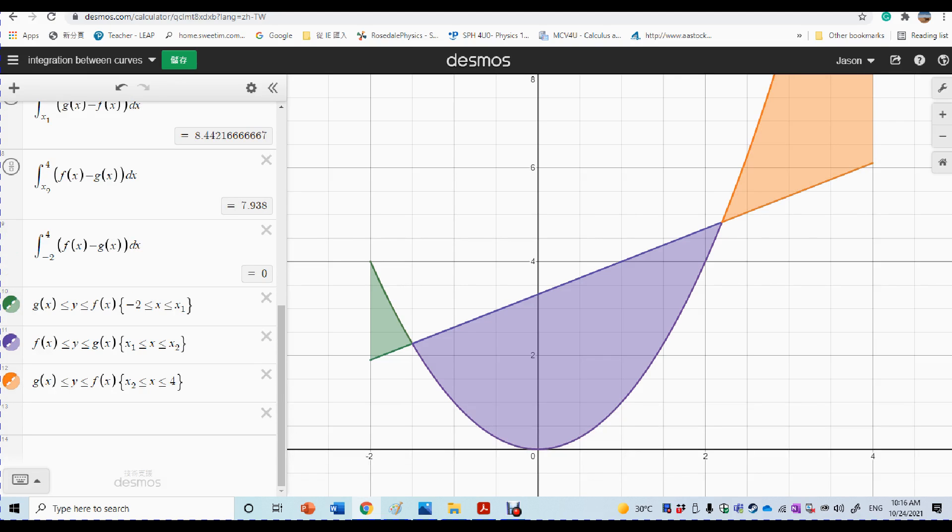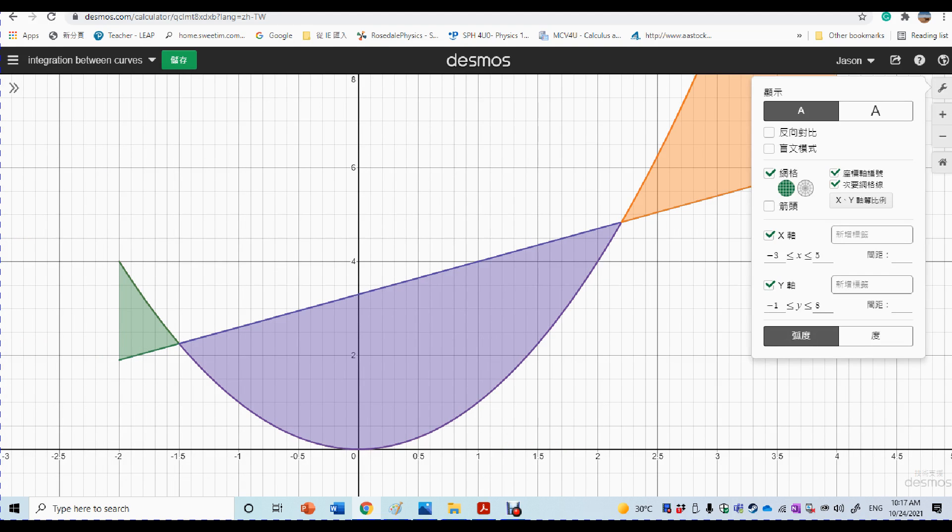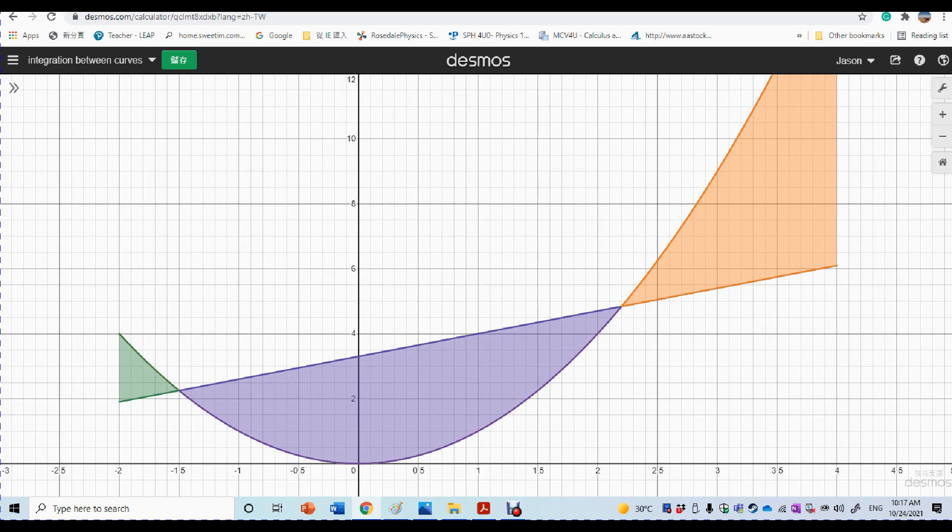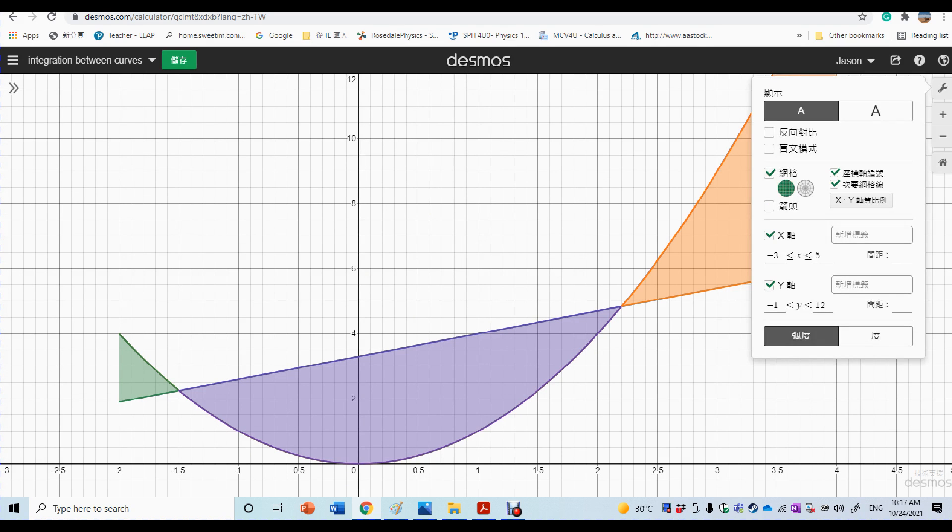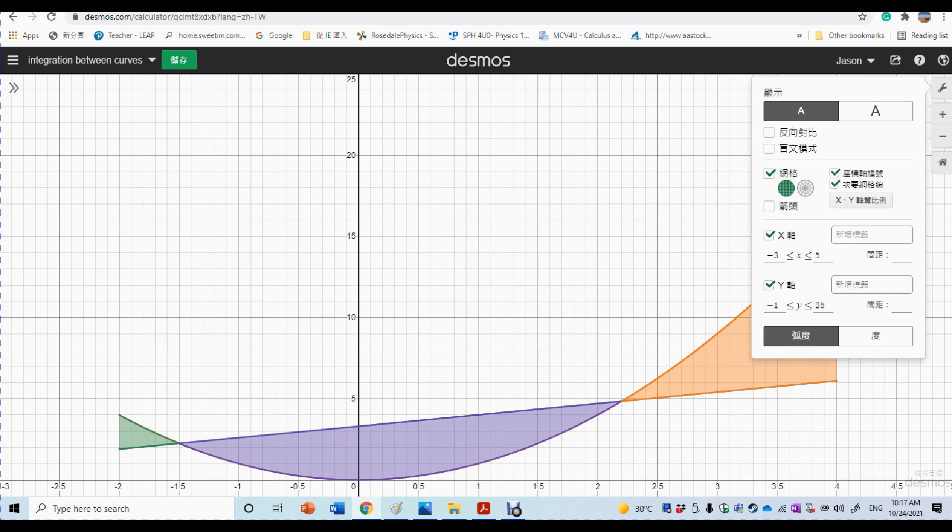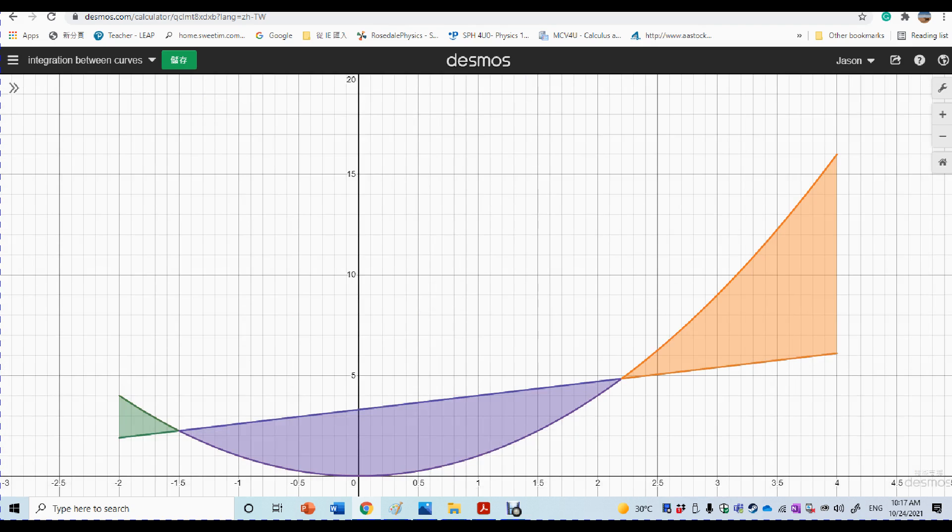So right now, see these three areas, you can adjust the graph to be fine. All right, so see these three areas.